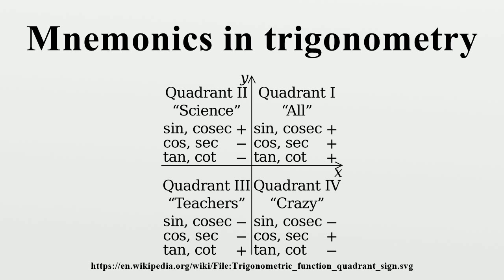AZAL's mnemonic is an alternative to S-O-H-C-A-H-T-O-A for people who use different names for the legs of a triangle, i.e., perpendicular for opposite and base for adjacent. AZAL's mnemonic goes like this: 'Some people have curly black hairs through proper brushing.' Here, 'some people have' is for sine equals perpendicular over hypotenuse; 'curly black hairs' is for cosine equals base over hypotenuse; and 'through proper brushing' is for tangent equals perpendicular over base.